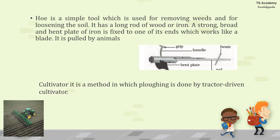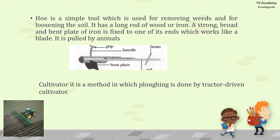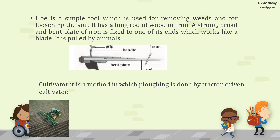The next tool is the hoe, which is a simple tool used for removing weeds and for loosening the soil. It has a long rod of wood or iron, and a strong, broad, bent plate of iron fixed to one end, which works like a blade. It is pulled by animals. The cultivator is a method in which plowing is done by a tractor-driven cultivator.